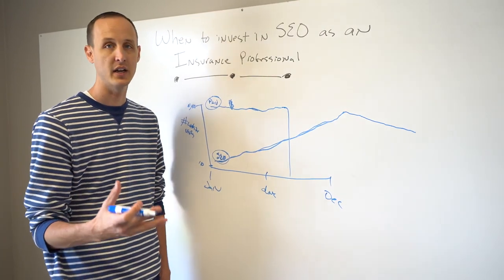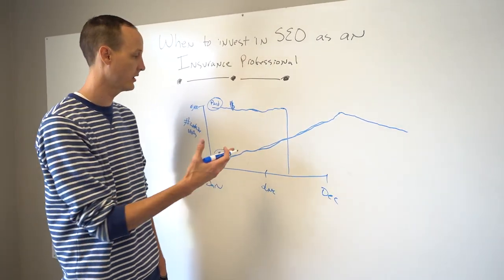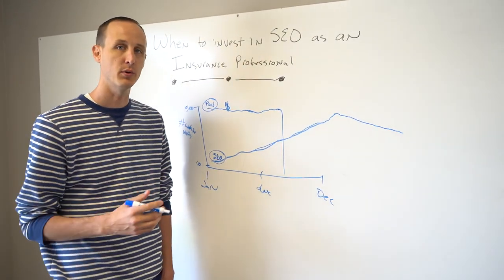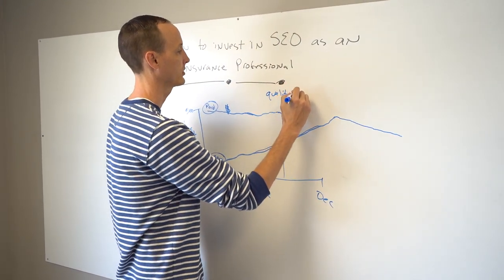Now, this is, I'm going to give you an advanced nugget that's maybe for some more advanced individuals that are watching this video. One of the things that paid traffic, specifically Google uses, is a metric called a quality score.